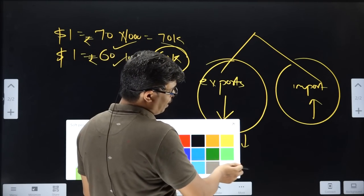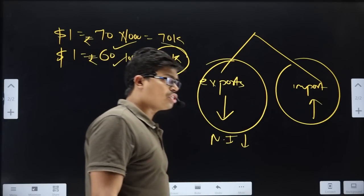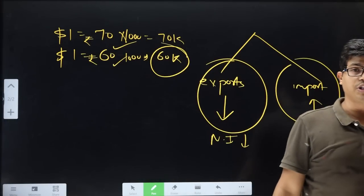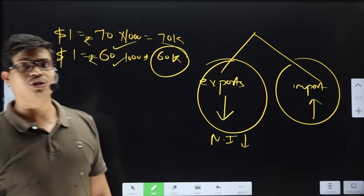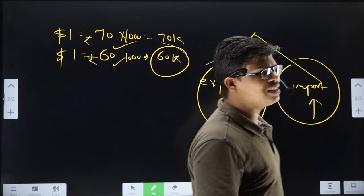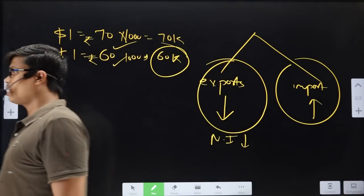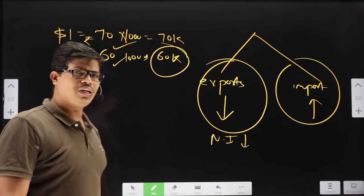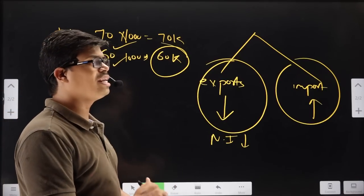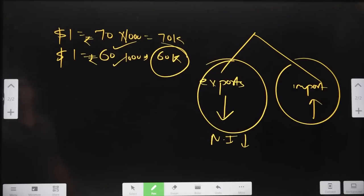Some students ask which is better — depreciation or appreciation. You cannot say simply which is good; it depends on the situation of the country. Sometimes depreciation is good; sometimes appreciation is. In 1991, Manmohan Singh devalued India's currency to attract more foreign currency reserves and increase the supply of dollars. Both have their own implications.